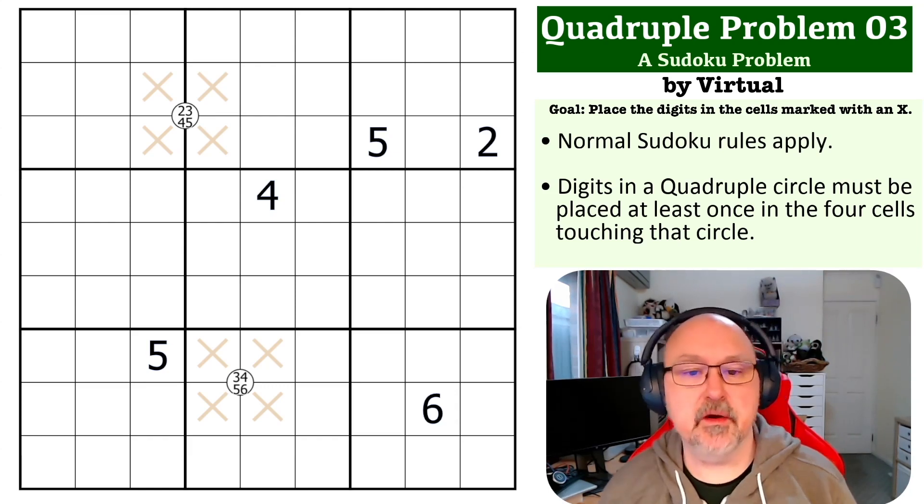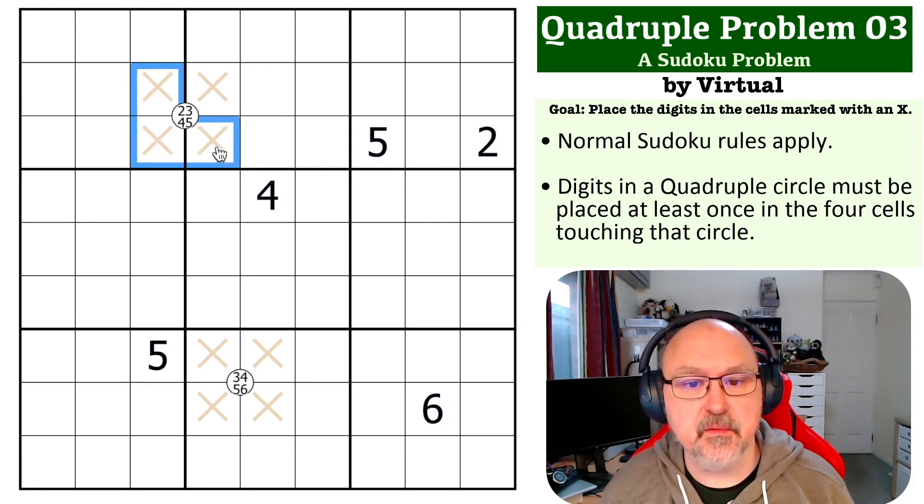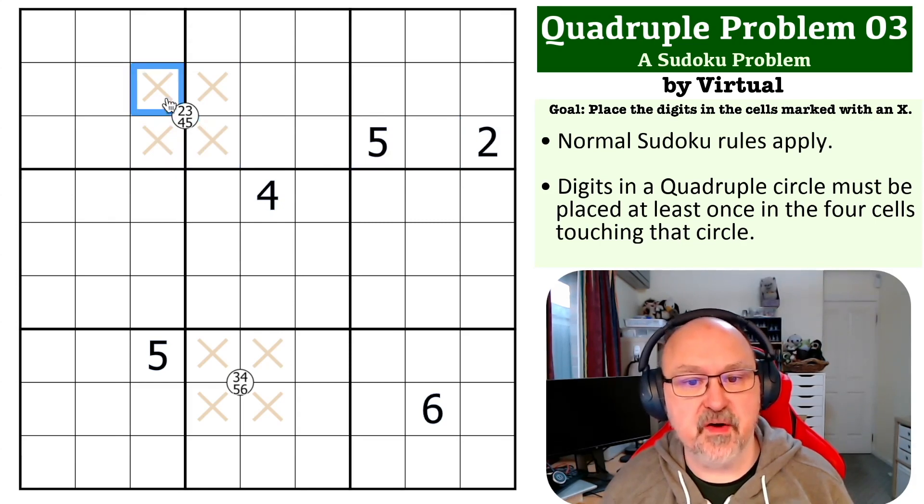Okay, so the way I looked at this one was to start off with using the fact that this quadruple had to have 2, 3, 4, and 5 around it, but we've got a 2, 5 looking at it, so you cannot put 2 and 5 here.